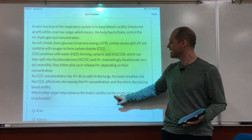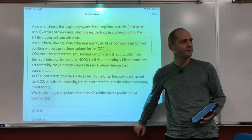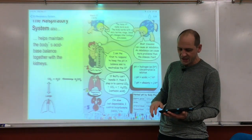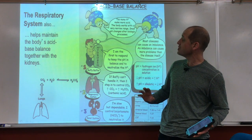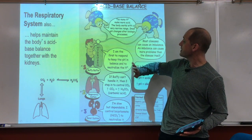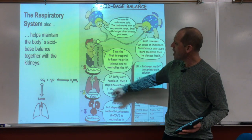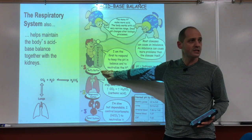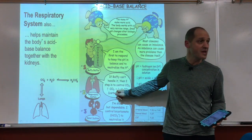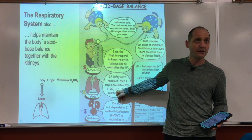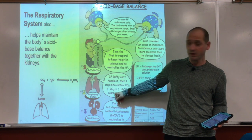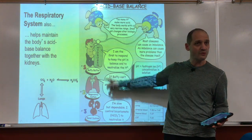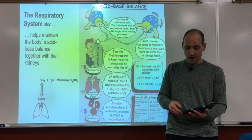Which other organ helps balance the body's acidity through production of bicarbonate? The kidneys. So you have three controllers for acidity: first, the bicarbonate ion buffering system that chemically picks it up; second, the lungs that breathe out CO2 and control acidity that way; and third, the kidneys, which can make more bicarbonate ions to make the buffering system bigger.